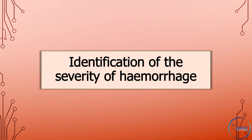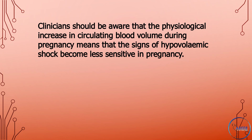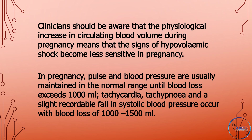Identification of the severity of hemorrhage: clinicians should be aware that the physiological increase in circulating blood volume during pregnancy means that the signs of hypovolemic shock become less sensitive in pregnancy. Pulse and blood pressure are usually maintained in the normal range until blood loss exceeds 1,000 milliliters.